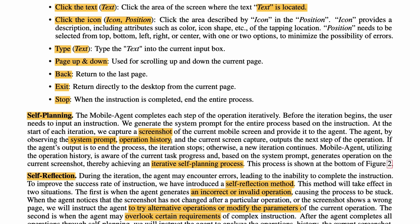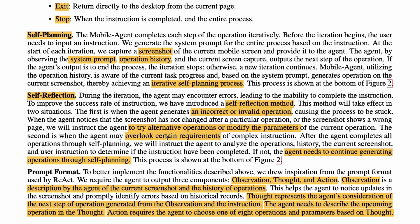Using the instruction, screenshot, and operations history, the system plans what to do next — what is the next step and where it stops. But as we have seen with LLMs time and time again, not everything is perfect. LLMs make mistakes, and when they do, you need a system to say 'I've made a mistake.' That is what they call the self-reflection method. The self-reflection method detects when an agent has generated an incorrect or invalid operation that could make the entire system stuck.